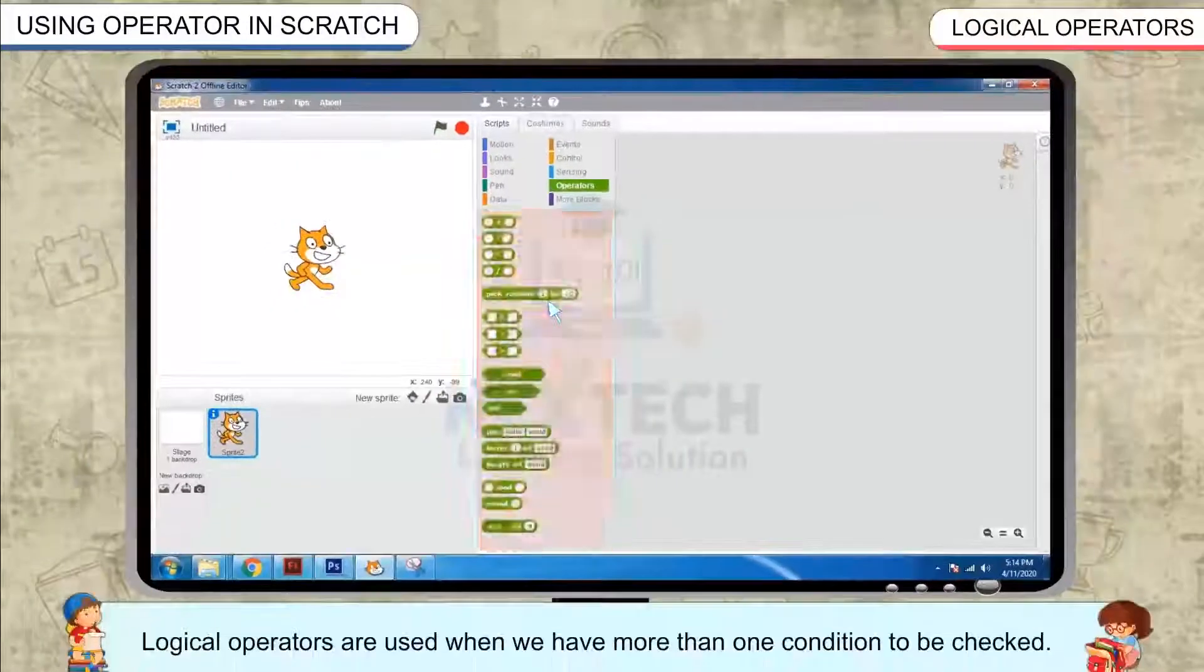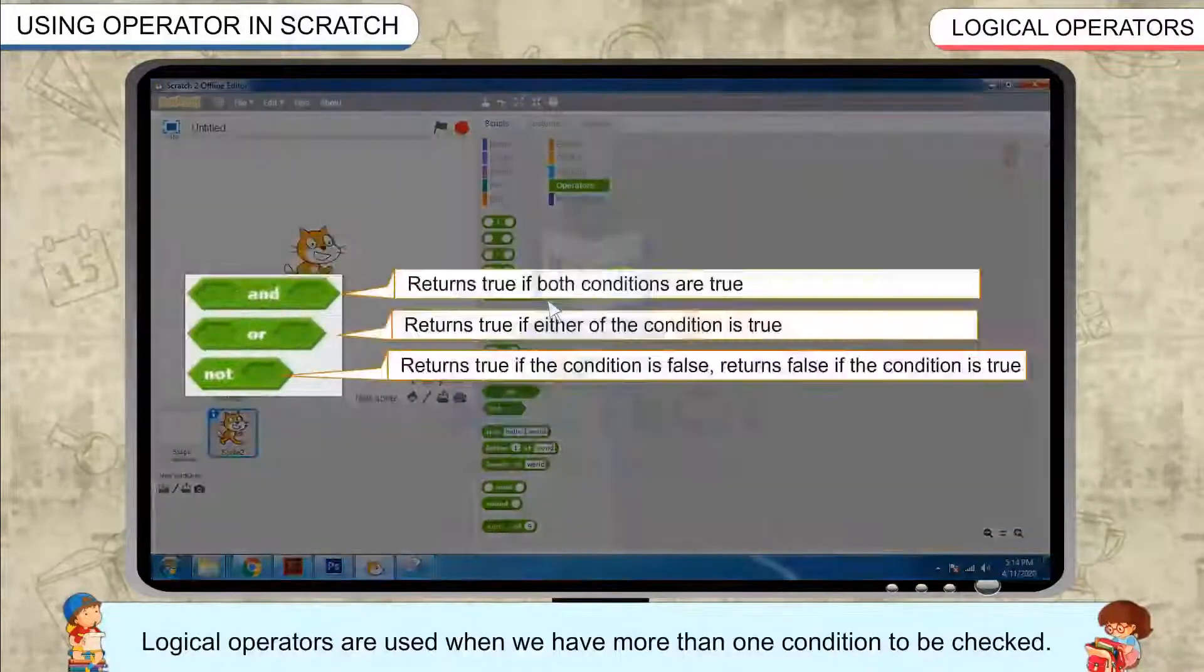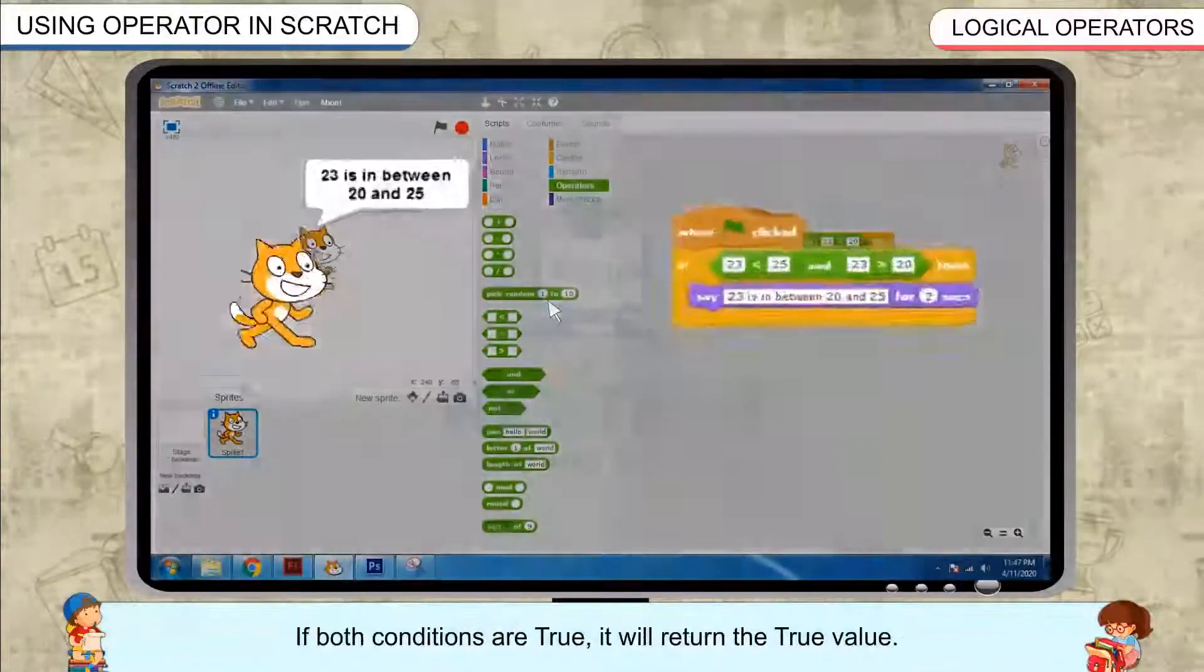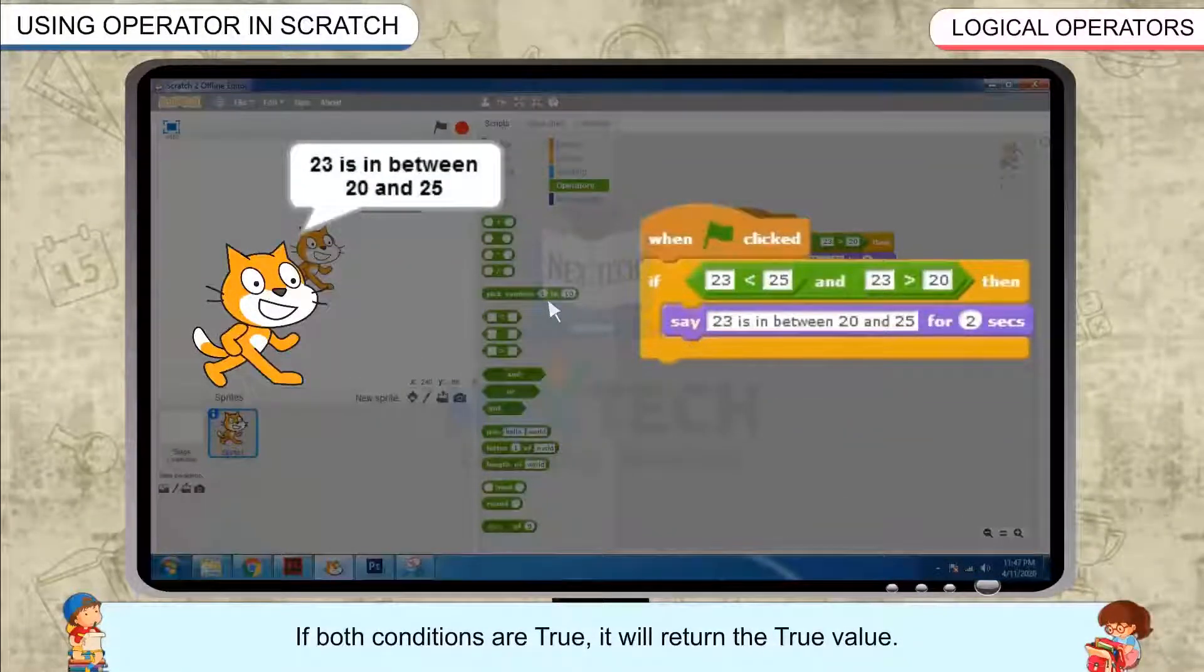Logical Operators are used when we have more than one condition to be checked. If both conditions are true, it will return the true value.